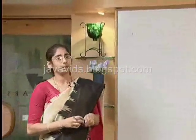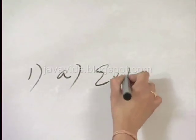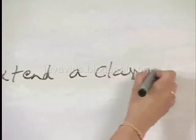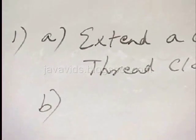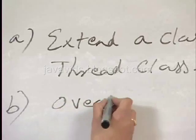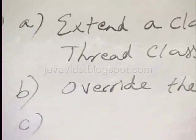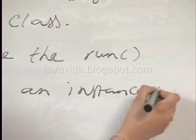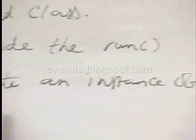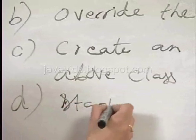Method one: extending from the Thread class. The first step is to extend a class from the Thread class and overwrite the run method. Then create an instance of the above class and start the thread.